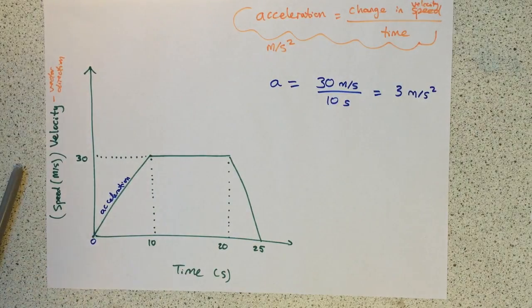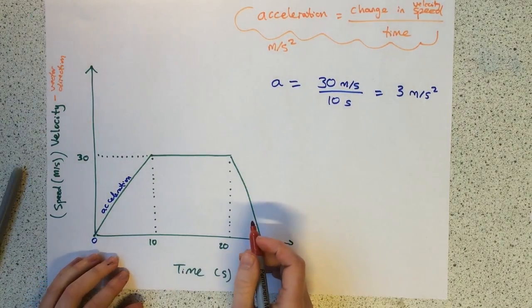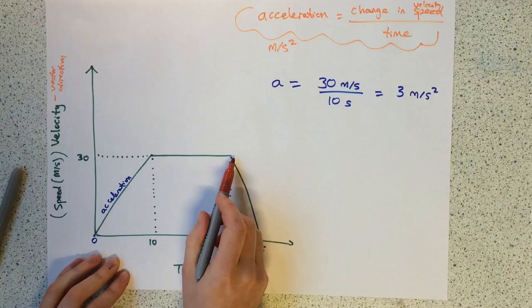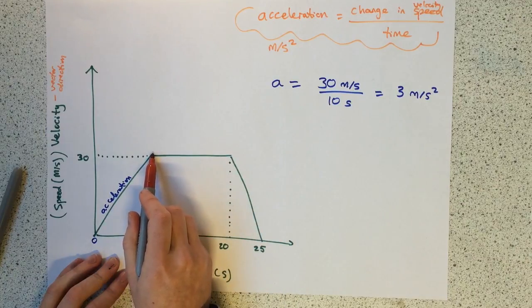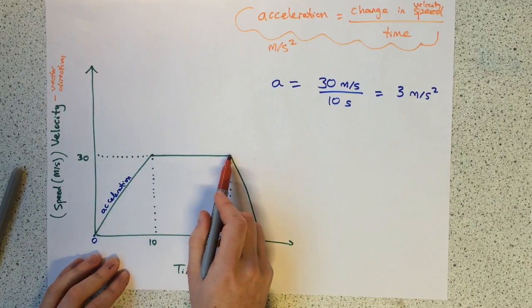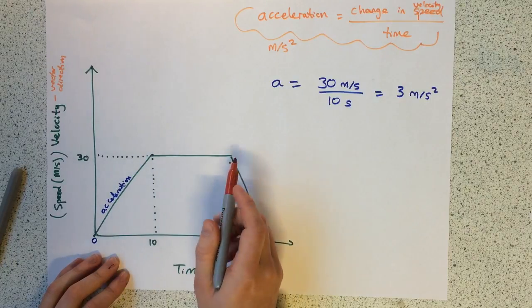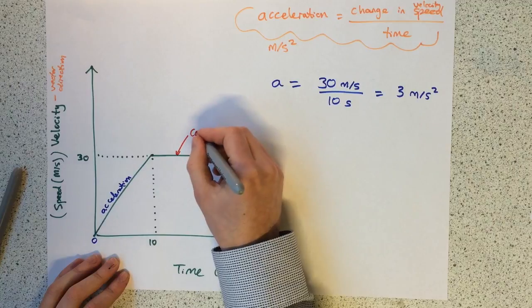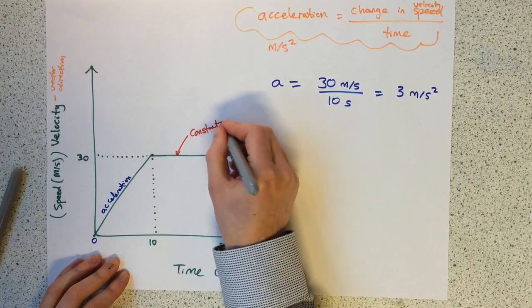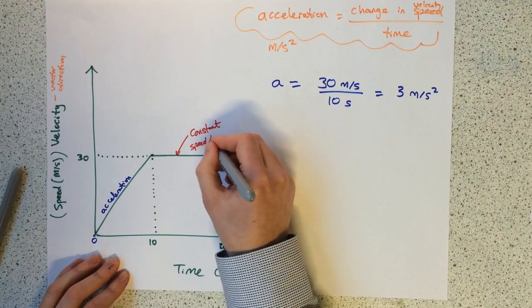Next, the section shows that the velocity here is 30, the velocity here is 30. So there is no change in velocity. This shows a constant speed or velocity.